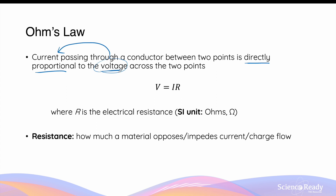So Ohm's law is basically saying: if you have a higher voltage across two points, you will also cause a greater magnitude of current. This should make sense because voltage is simply the amount of energy given to charges — if you've got more voltage, you give the charges more energy, and therefore the electrons will move more quickly, giving rise to a greater current.